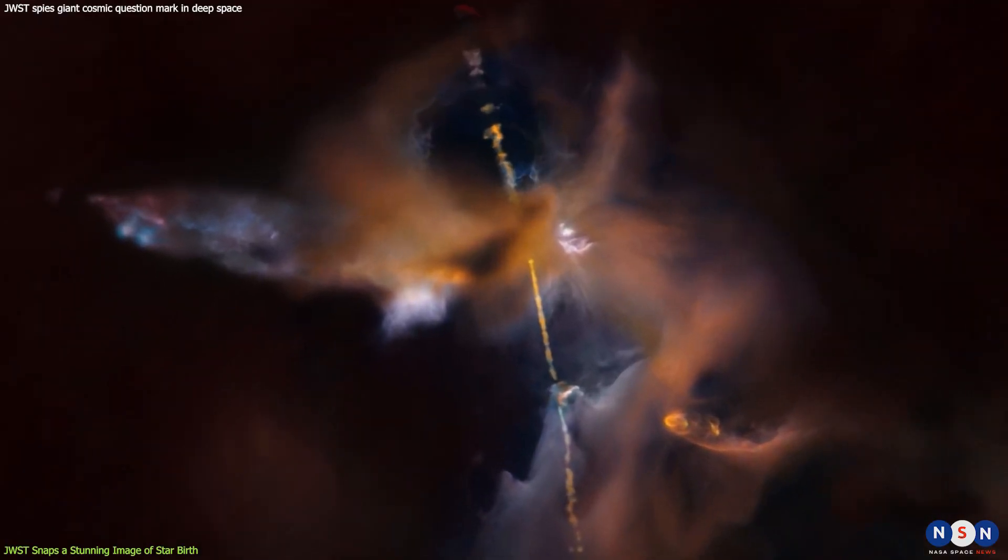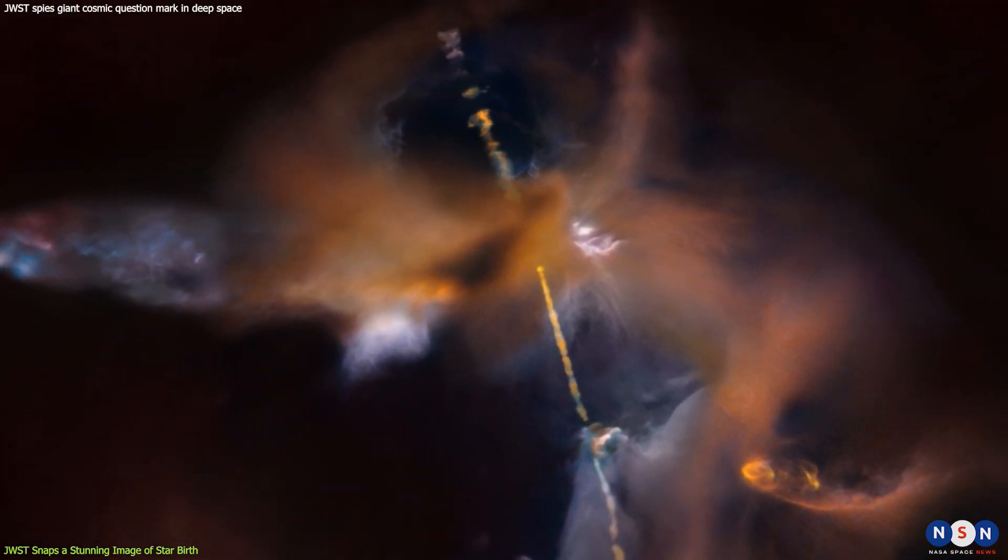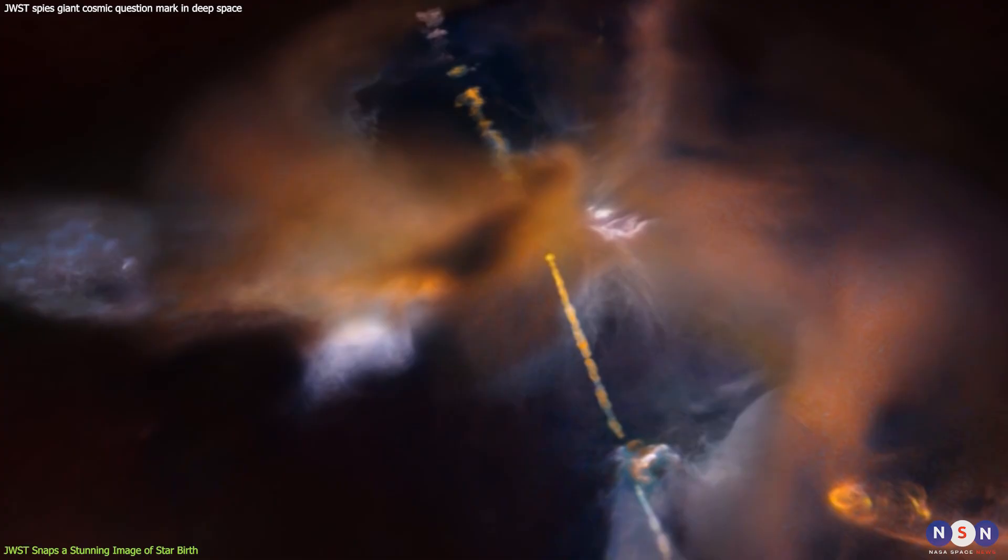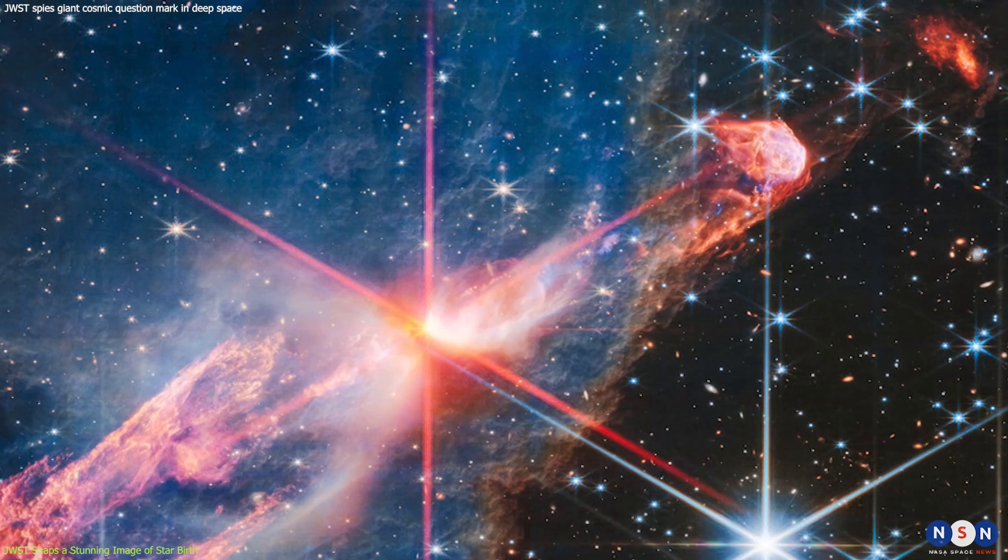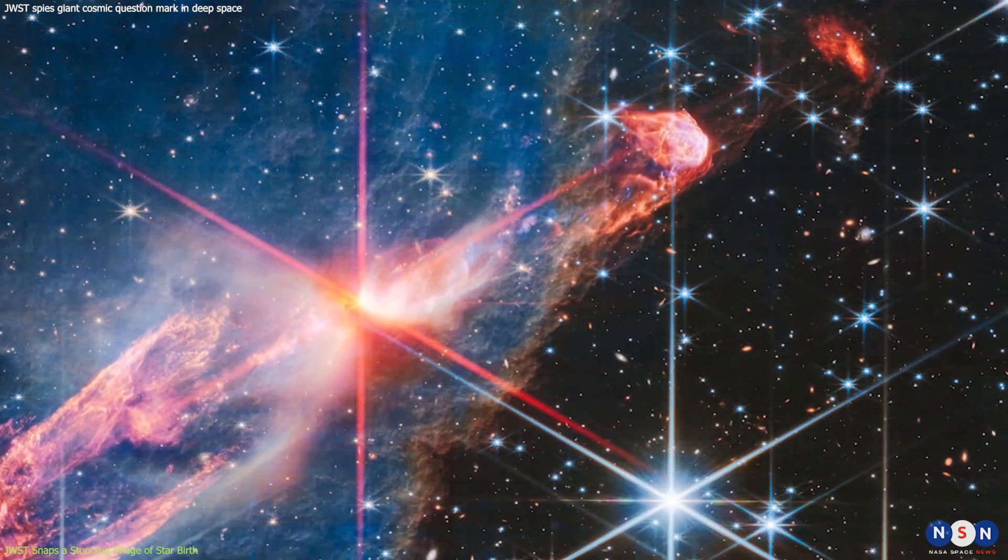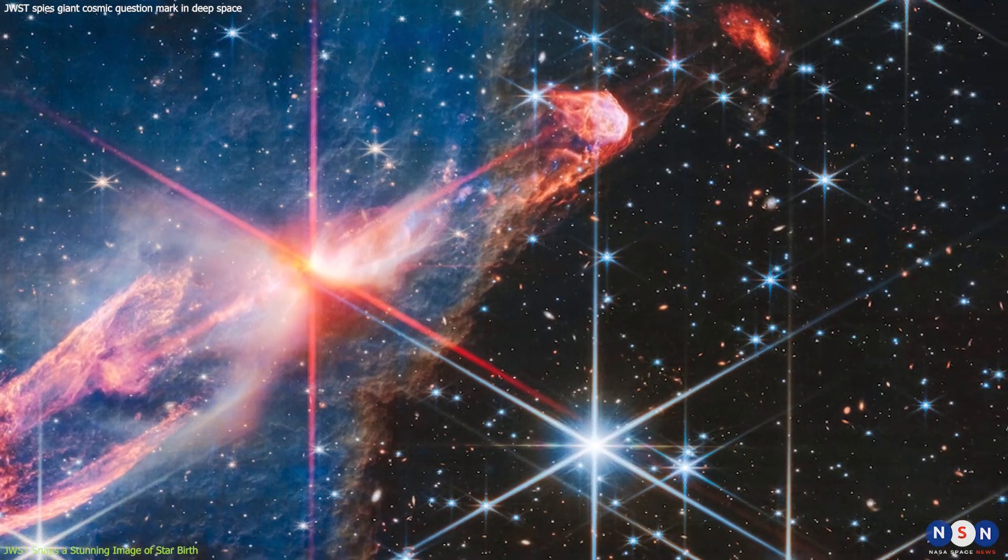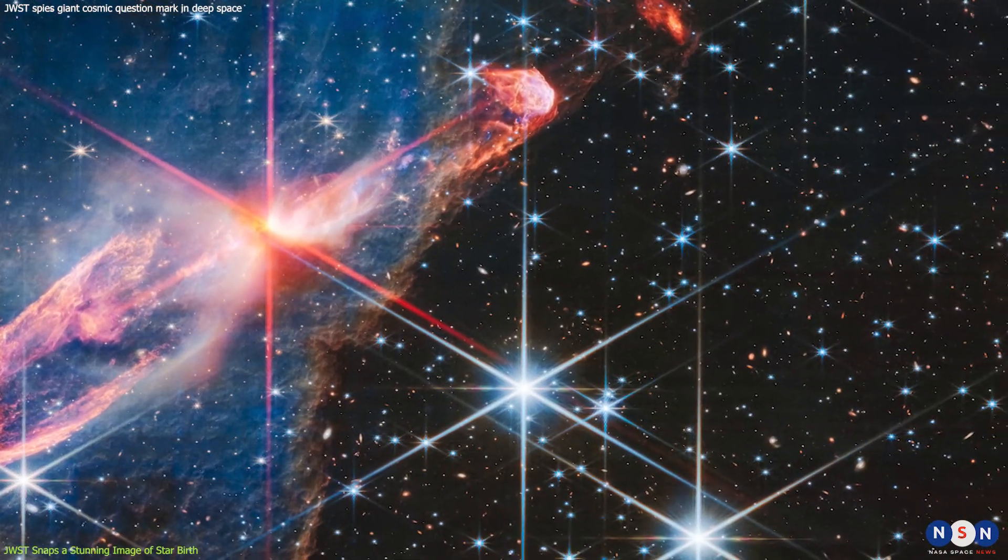By observing them with James Webb, we can learn more about how stars are born and how they interact with their environment. According to NASA, the image of HH46 and HH47 is one of the sharpest ever taken of this type of object.